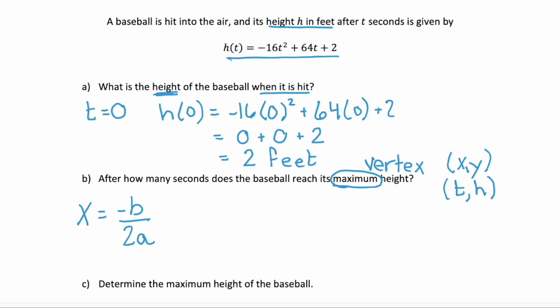And remember, the a and the b come from that standard form for our quadratic, where it's ax squared plus bx plus c. Here a is equal to negative 16, and b is 64, and c would be 2.